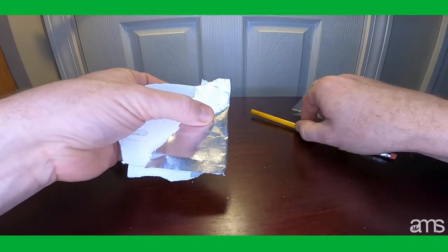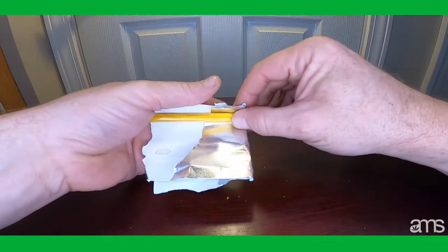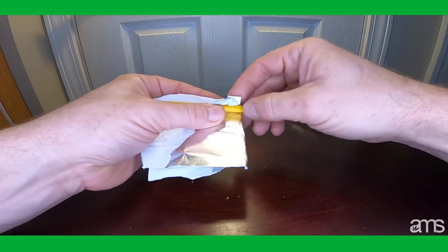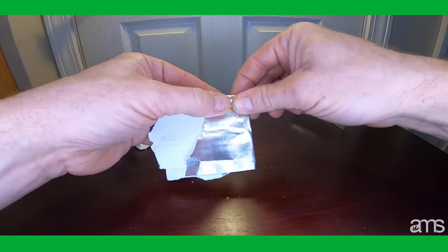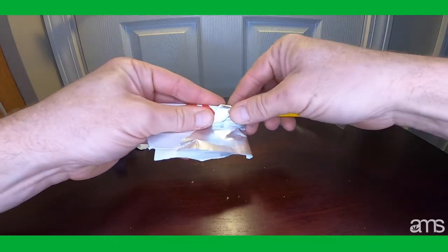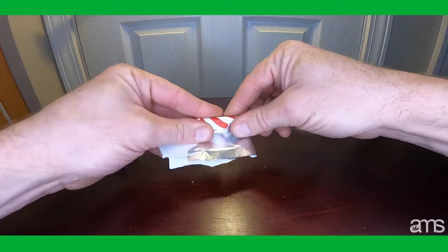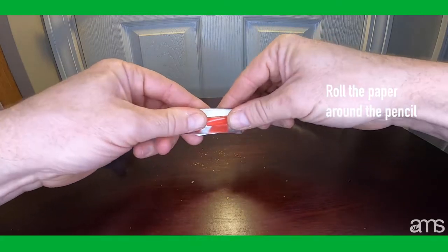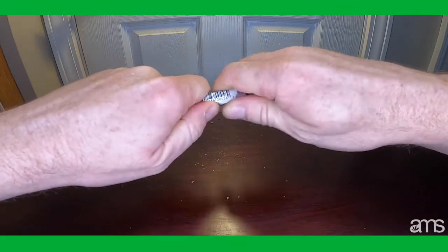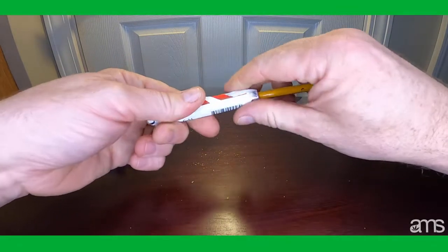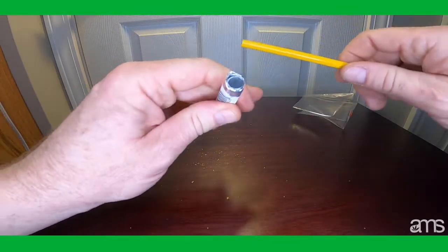Get over the edge of it and then I'm going to take a pencil, simply roll it on the pencil like so. You basically have created a one hitter, as you can see.